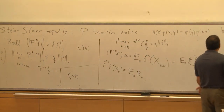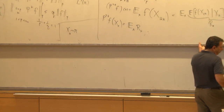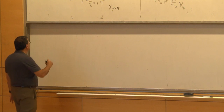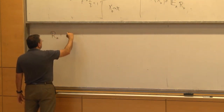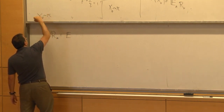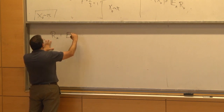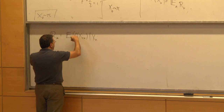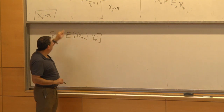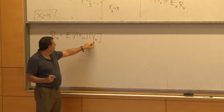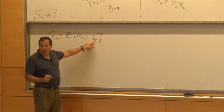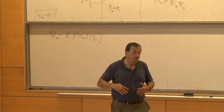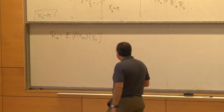X_0 is chosen according to pi, and then we look at the expectation of F(X_{2K}) given X_K. Since X_0 is distributed according to pi, so is X_K. Now X_{2K} is just the point obtained by running the chain forward K steps. But the chain is reversible, and if you start at stationarity and run it forward K steps, this has exactly the same distribution as running backward K steps. So R_K is a function of X_K, measurable with respect to X_K.